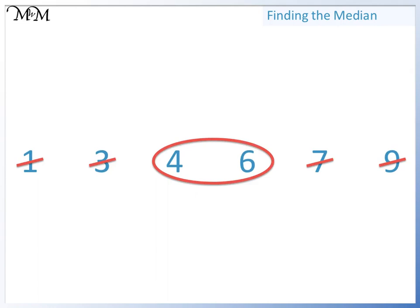There are two numbers in the centre. To find the median, we need to find the number that is halfway between 4 and 6. To do this, we will find the mean of 4 and 6.